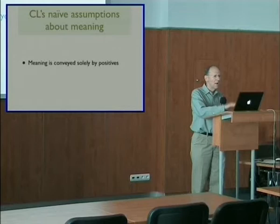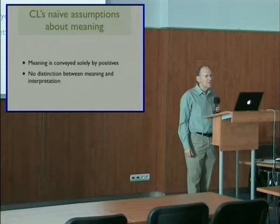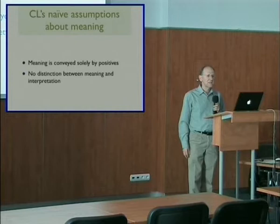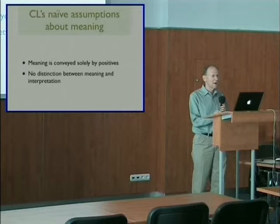Next, computational linguistics assumes that meaning is conveyed solely by what is positive in the text — meaning arises only in what the text says, and not in what it doesn't say. I've got a whole other talk on this point, so I won't really get into it today. And last, computational linguistics makes no formal distinction between meaning and interpretation — largely because these days there's no attempt at interpretation at all. Certainly, computational linguistics sees little difference between text-meaning and sentence-meaning, except perhaps for a little sentence-level pragmatics.